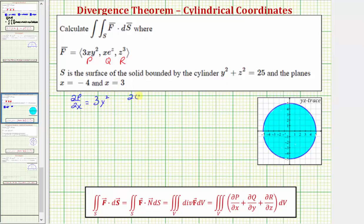The partial of q with respect to y is equal to the derivative of x·e^z with respect to y, which would be zero. And the partial of r with respect to z is equal to the derivative of z³ with respect to z, which would be 3z².